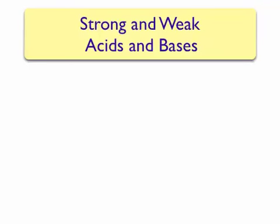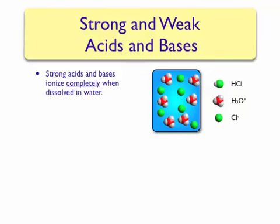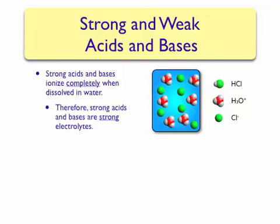We can also classify acids and bases as strong or weak. These are directly connected to the definitions for strong and weak electrolytes. Strong acids and bases ionize completely when dissolved in water; therefore, they are strong electrolytes. On the right is an example of a strong acid, hydrochloric acid. If we look at a molecular-scale model of hydrochloric acid in solution, we will only find hydronium ions and chloride ions — no HCl molecules left intact.